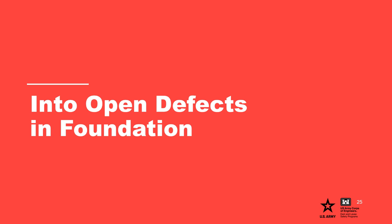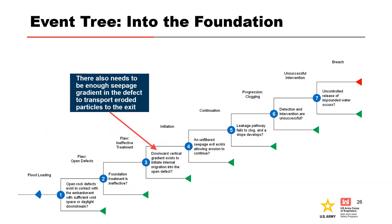Next, we'll discuss internal migration into defects in the foundation. Here's the event tree for evaluating internal migration into rock defects in the foundation. Node 1 is the first flaw node: an open rock defect exists in contact with the embankment that has sufficient void space or that daylights downstream. Node 2 is a second flaw node: the foundation treatment is ineffective. Node 3 is initiation: a downward gradient exists to initiate internal migration into the defect. If the exit daylights downstream, there also needs to be sufficient gradient to transport the particles to the exit.